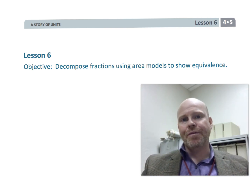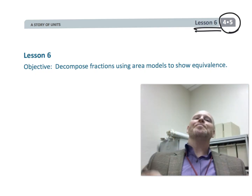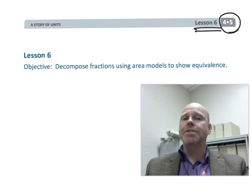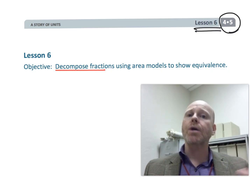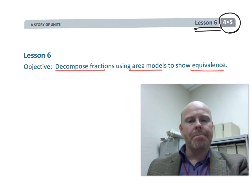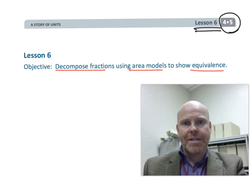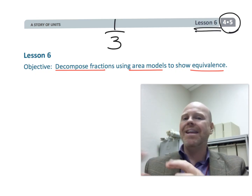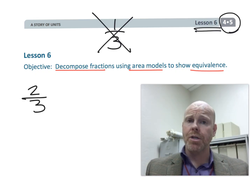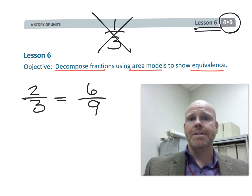This is fourth grade, module five, lesson six. In this lesson, students are going to be decomposing fractions using the area model to show two fractions are equivalent to one another. The difference compared to the prior lesson is that now, instead of just dealing with unit fractions, we're showing any two fractions are equivalent. For example, we're going to be showing that two-thirds is equal to six-ninths.